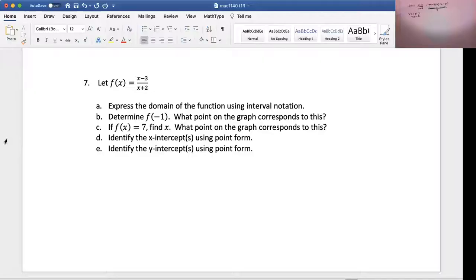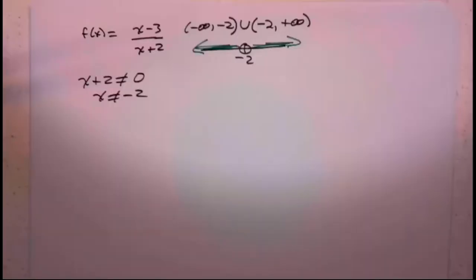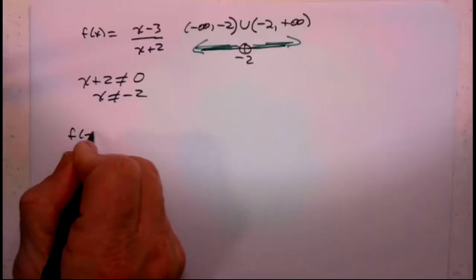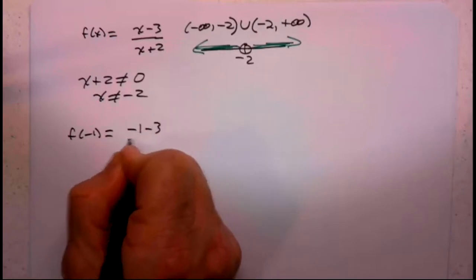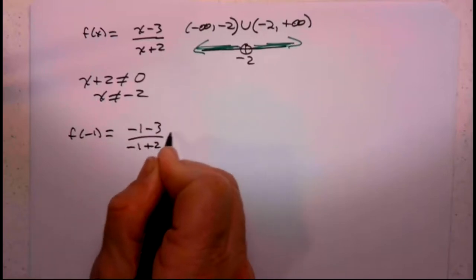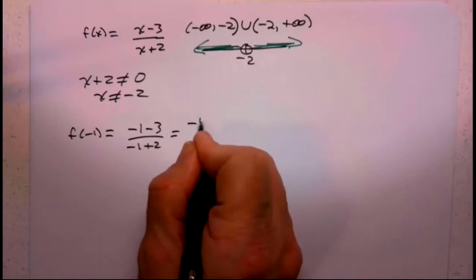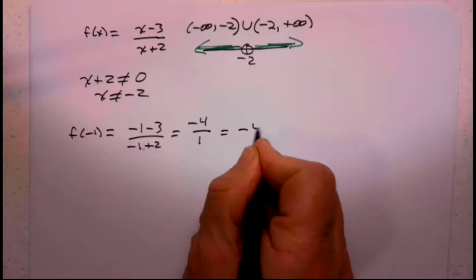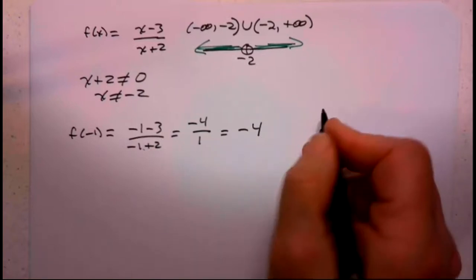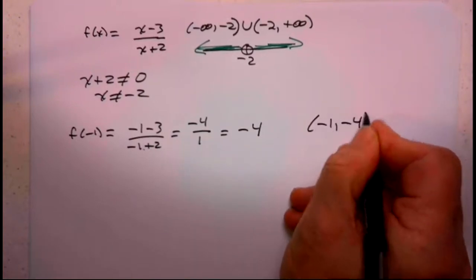Okay, the next thing it's asking me is determine f of negative 1 and what point on the graph is that. Well what is f of negative 1? Wherever you see an x, replace it with negative 1. So negative 1 minus 3 over negative 1 plus 2. Negative 1 minus 3 is negative 4. Negative 1 plus 2 is 1, which equals negative 4. So what point on the graph would that be? That would be negative 1, negative 4.